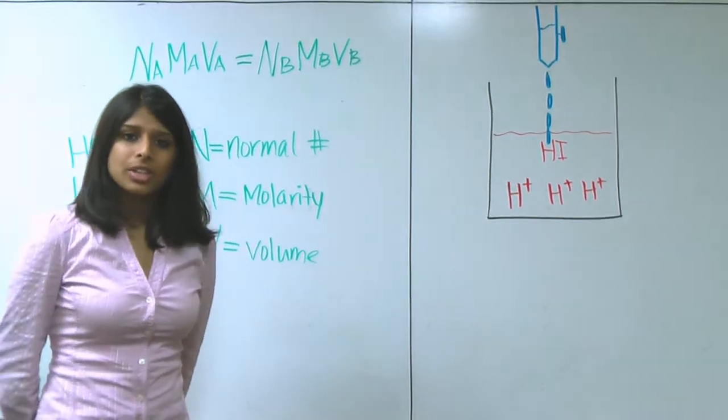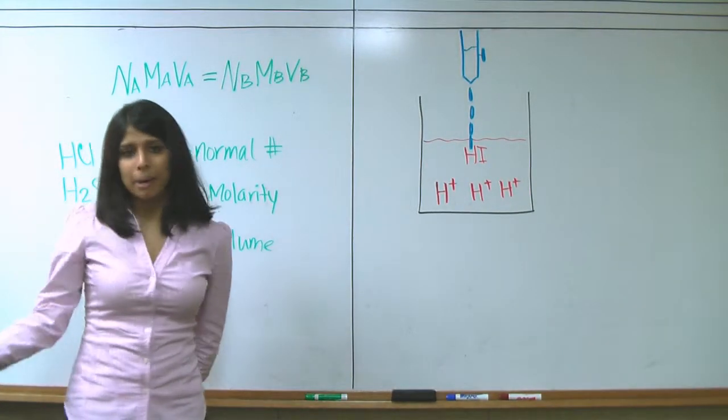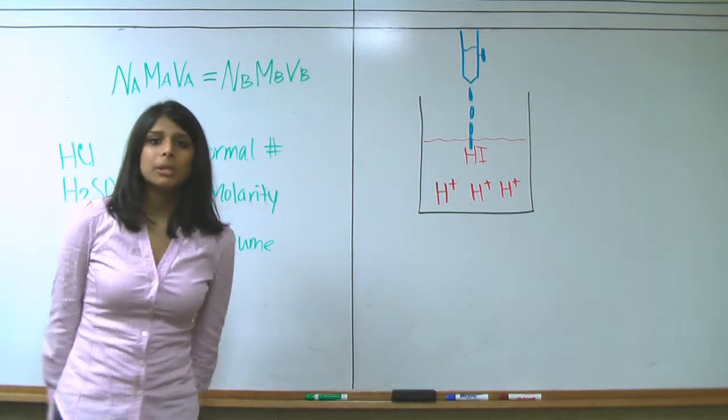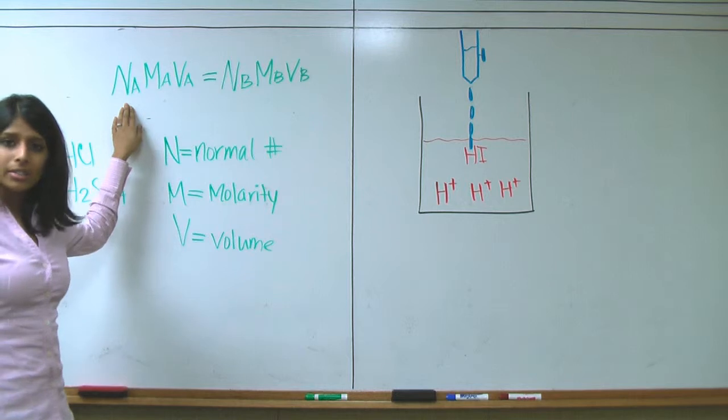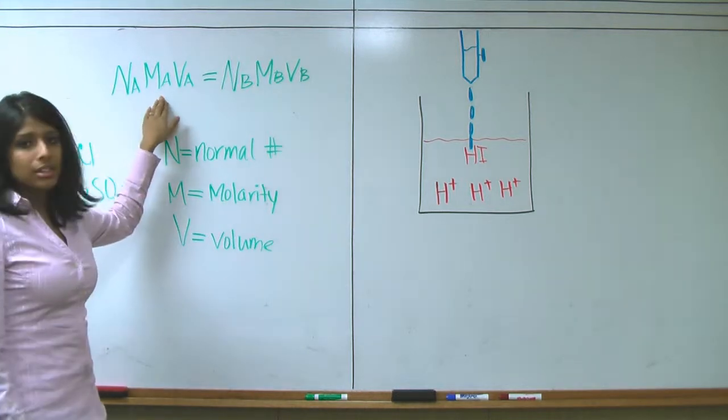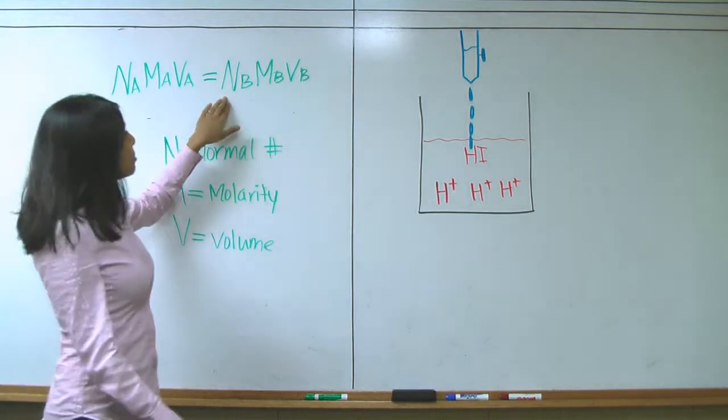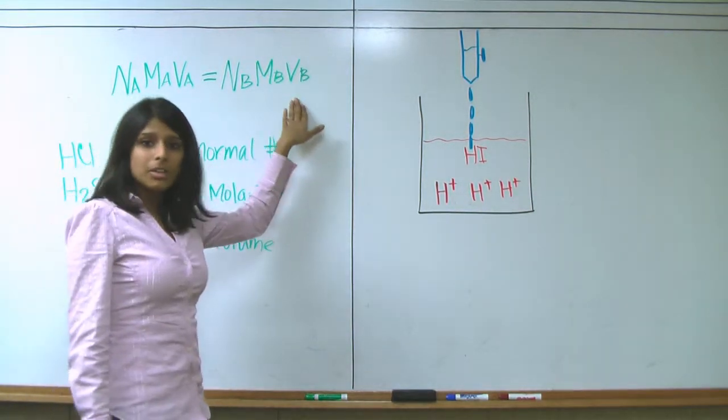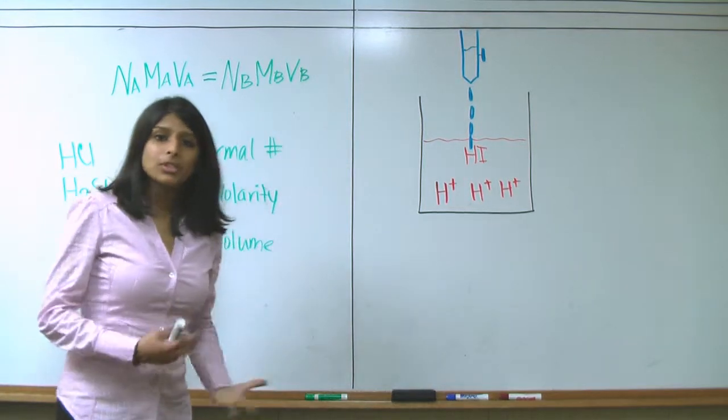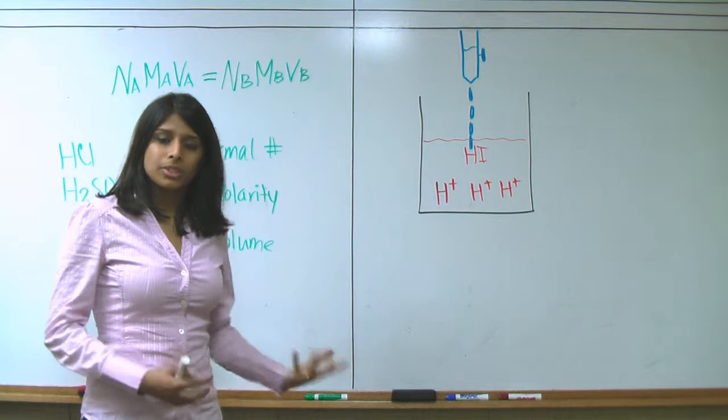The purpose of titration is to determine the unknown concentration of an acid by its base. We do this by using the following formula. We take the normal number of an acid times the molarity of an acid times the volume of an acid and set it equal to the normal number of a base times the molarity of a base times the volume of a base. All we have to do is isolate our unknown using algebra and solve for the rest of the equation.